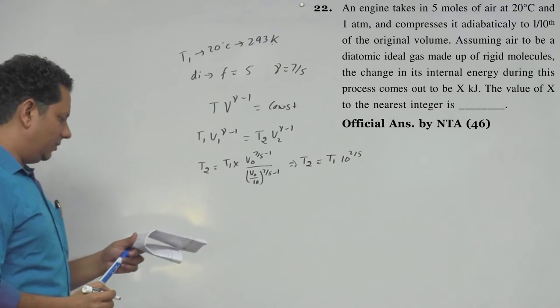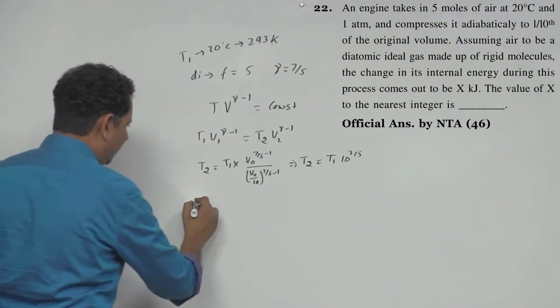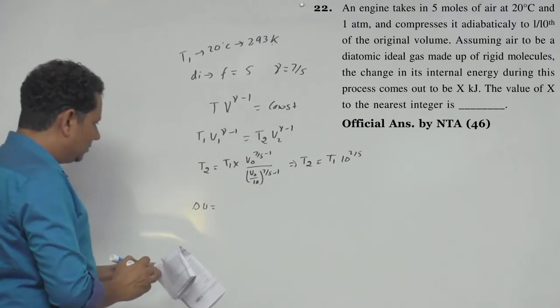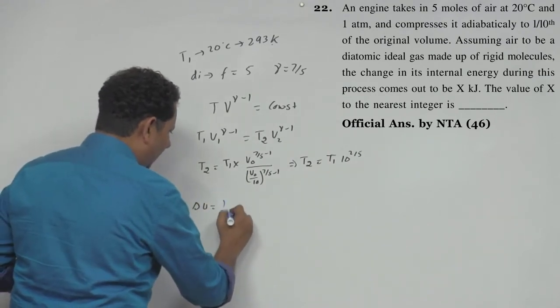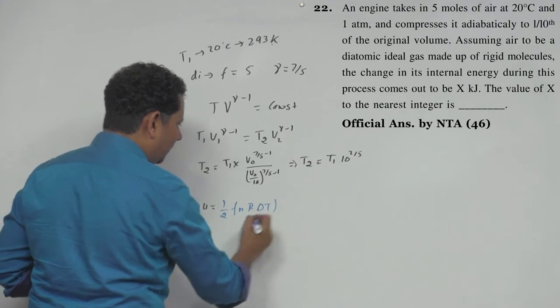Now we need to find delta U. The change in internal energy is given by delta U = (1/2)FnR delta T.